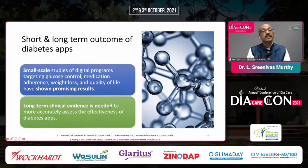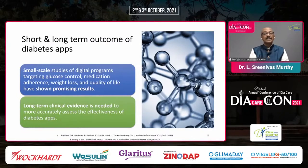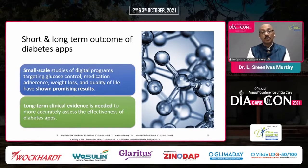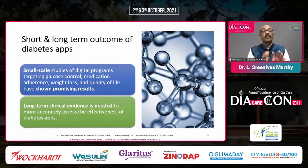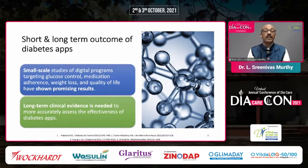Small-scale studies of digital programs targeting glucose control, medication adherence, weight loss, and quality of life have shown promising results, but long-term clinical evidence is lacking because most apps are regularly upgraded with newer versions. Short-term trials are available, especially with respect to adherence and glucose control measured by HbA1c. Studies show that electronic medical records and video consultations during the pandemic reduced HbA1c by 0.8 to 1%.